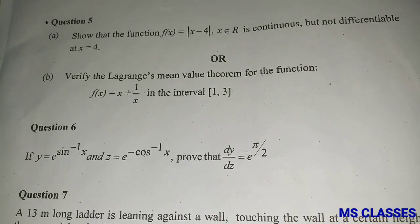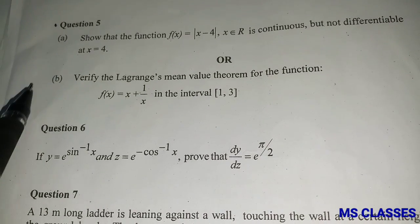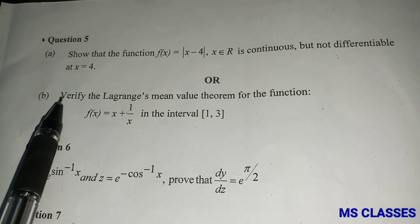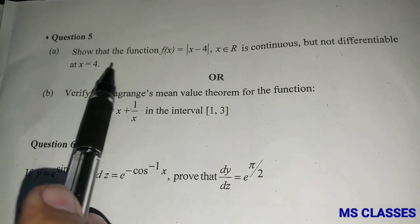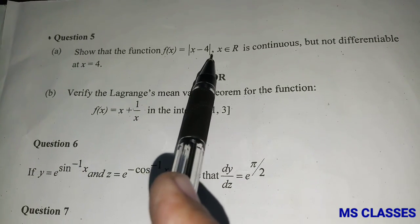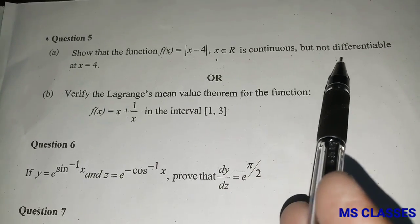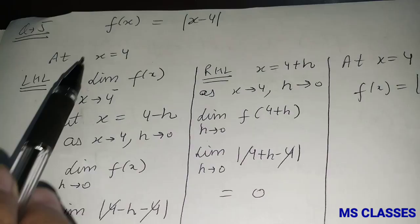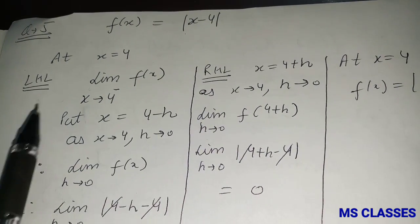Hello students, welcome to MS Classes. Let's start with Question 5 of ISC 2019 Maths Paper. The first question: show that the function f(x) = |x - 4|, where x belongs to ℝ, is continuous but not differentiable at x = 4. As f(x) is given as |x - 4|, we check continuity at x = 4.